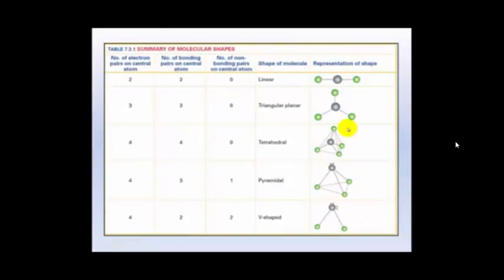So here's the summary. You've got your linear, which is in a straight line; triangular planar, which is flat; tetrahedral, which forms 109.5 degrees away from each other; pyramidal, which is tetrahedral with a lone pair of electrons; and V-shaped, which is tetrahedral with two lone pairs of electrons.